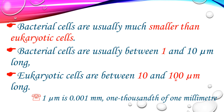Eukaryotic cells by comparison range from 10 to 100 micrometres in diameter. One micrometre is equal to 0.001 mm, or one-thousandth of a millimetre.